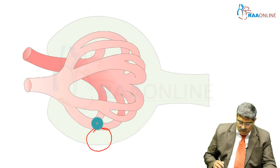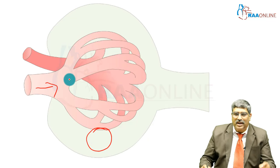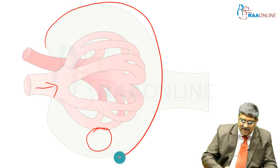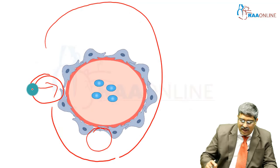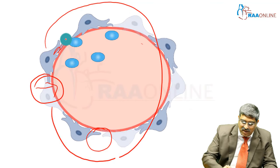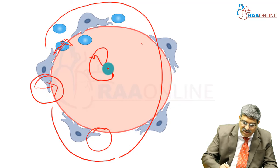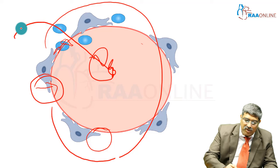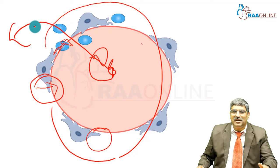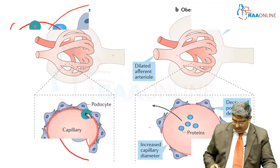This is the normal glomerulus, and this is the efferent arteriole. What happens is the glomerulus increases in size and efferent arteriole dilatation occurs. These are normal podocytes, but in obesity the podocytes get spaced out and the protein present inside leaks into the interstitium.